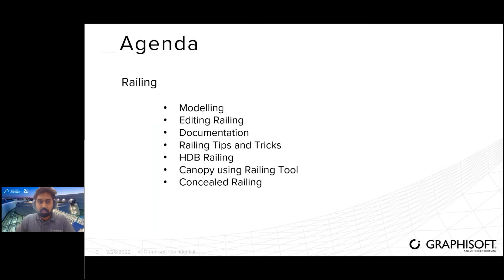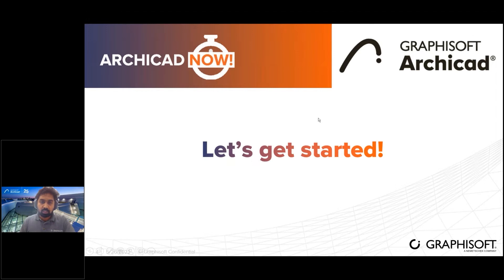The agenda for today: we will see how to do some modeling tips, how to edit railings both using the settings dialog and the edit mode, and how to document the railing in 2D using the settings dialog and model view options. Then I'll show some tips and tricks, followed by examples which include HDB railing, creating a canopy using the railing tool, and concealed railing — creating grooves inside the wall using the railing tool.